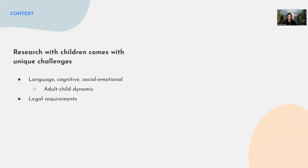Running research with kids is very different from running research with adults. It comes with unique challenges because kids of different ages are at different developmental levels. In terms of language, they might not have good literacy skills, can't read as well, and might not express themselves as well as adults. In terms of attention span, kids have pretty limited attention span, and it's unrealistic to expect them to sit through a one-hour remote session. It's important to give them breaks and mix up different tasks.